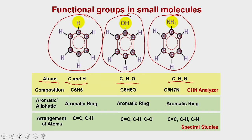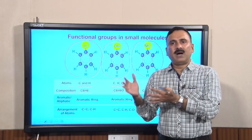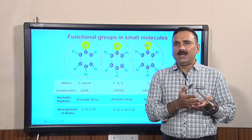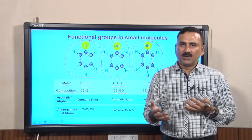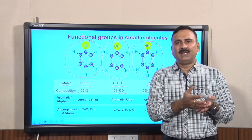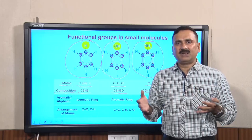For example, benzene contains carbon and hydrogen, phenol contains carbon, hydrogen, and oxygen, and aniline contains carbon, hydrogen, and nitrogen. If you do a composition analysis, benzene is C6H6, phenol is C6H6O, and aniline is C6H7N. You can do this simply by putting your compound into the CHN analyzer, which will tell you the percentage of carbon, hydrogen, and nitrogen present in your compound. Depending on these results, you can calculate the empirical formula and deduce what atoms are present. For CHN analysis you need 1 to 5 milligrams of your compound.